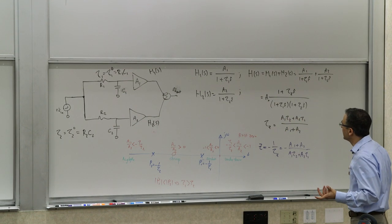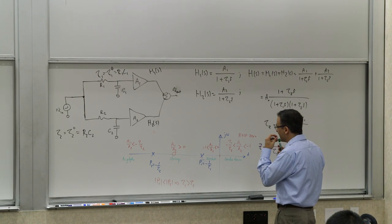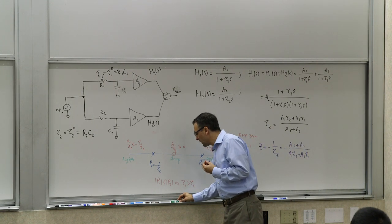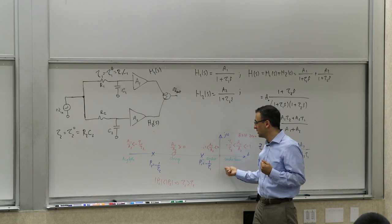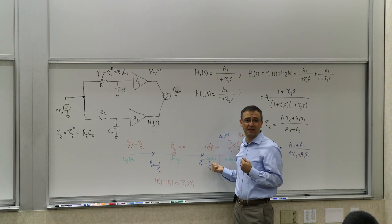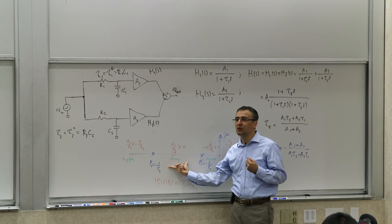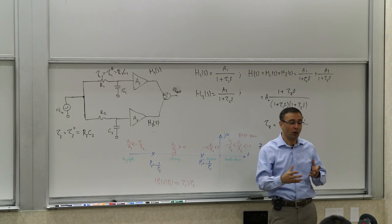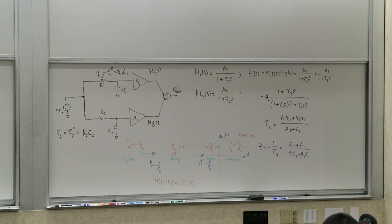The key takeaways are: undershoot is the signature of a right half plane zero; you can get overshoot without complex poles; a zero between two real poles produces droop; and most importantly, two parallel signal paths create a zero in the transfer function of the system.